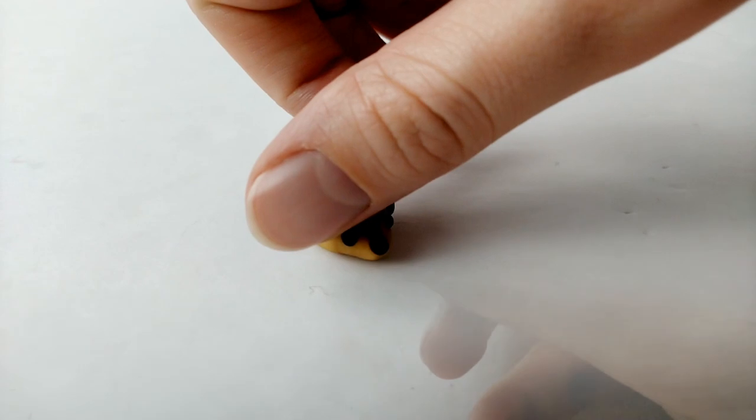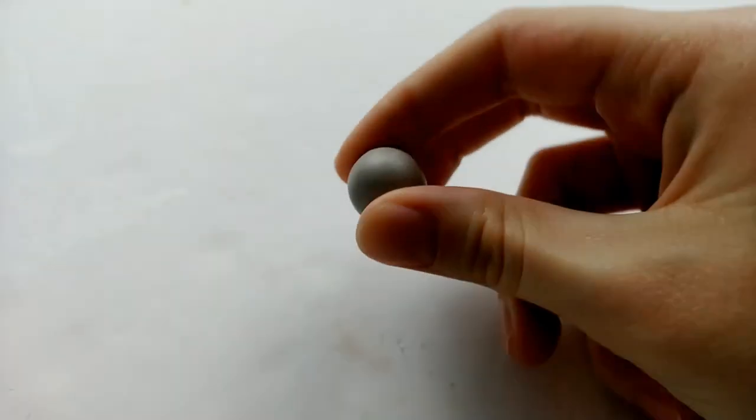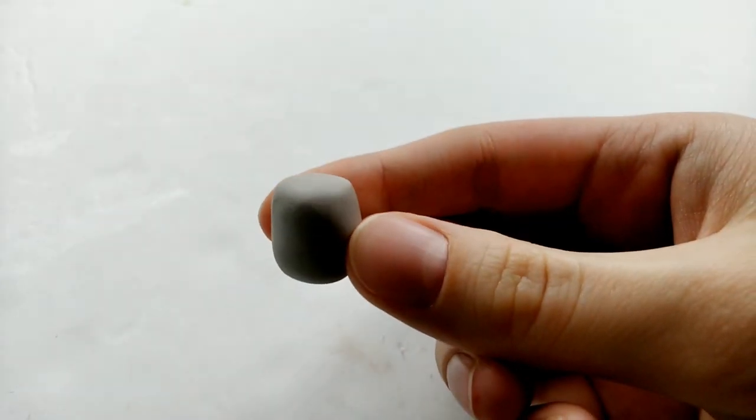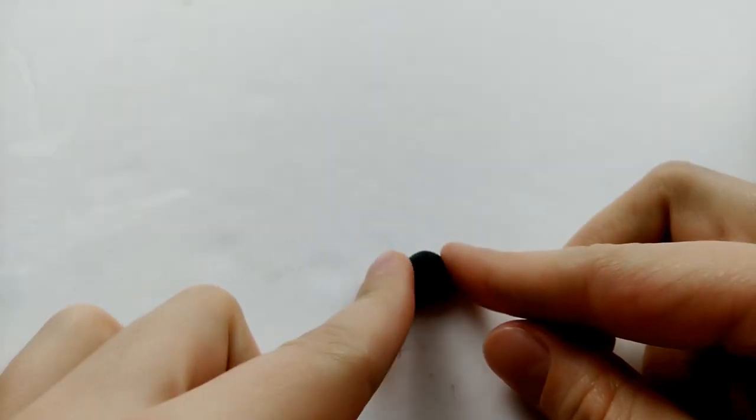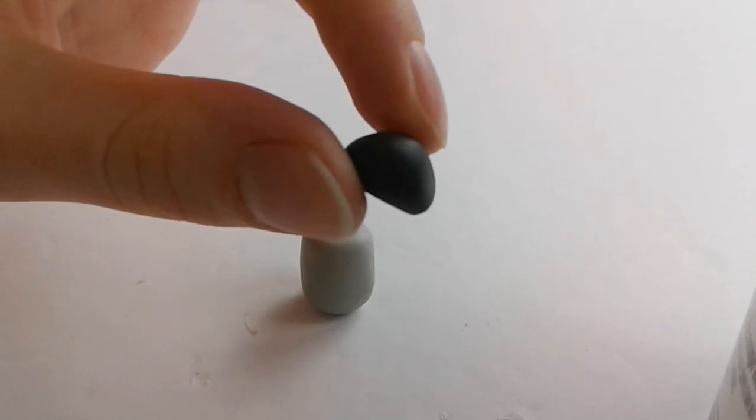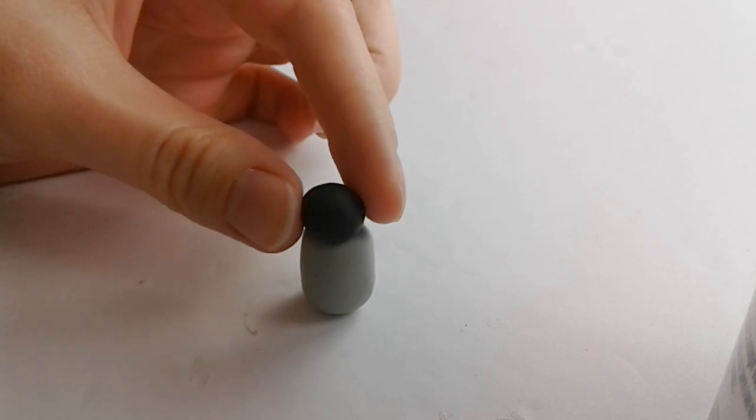Next with a grey ball of clay, we're going to slightly flatten it out and press one side against the table to create a flat surface. Then we're going to take a small black ball of clay and make it into a dome shape by pressing it against the table. Then just place the black clay on top, flat sides together, and we're going to roll it against the table to connect the two. And it should look like this.